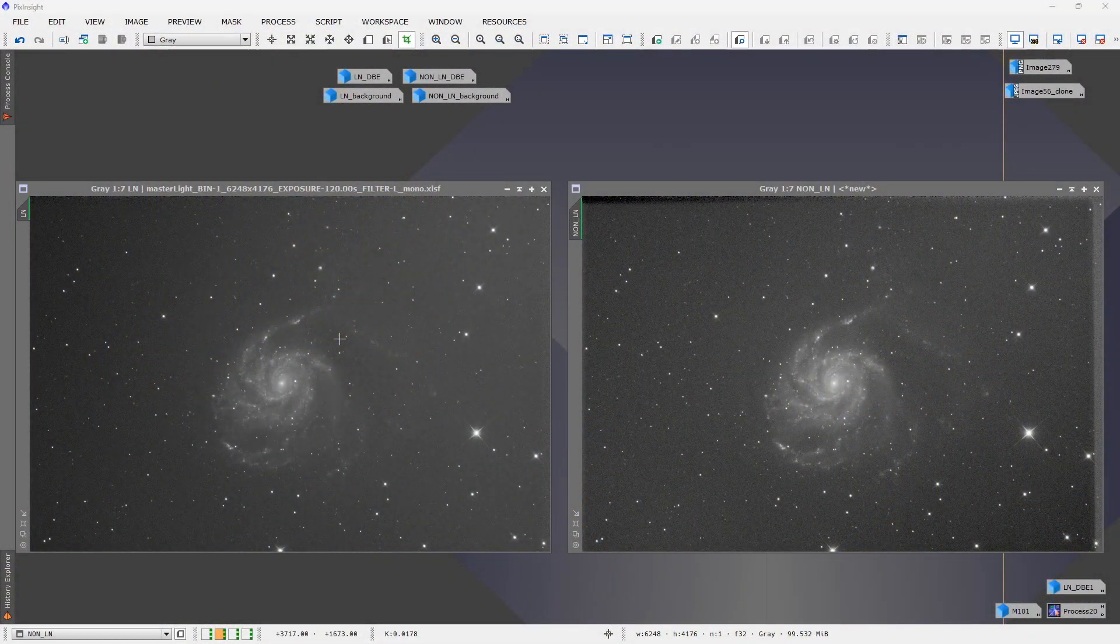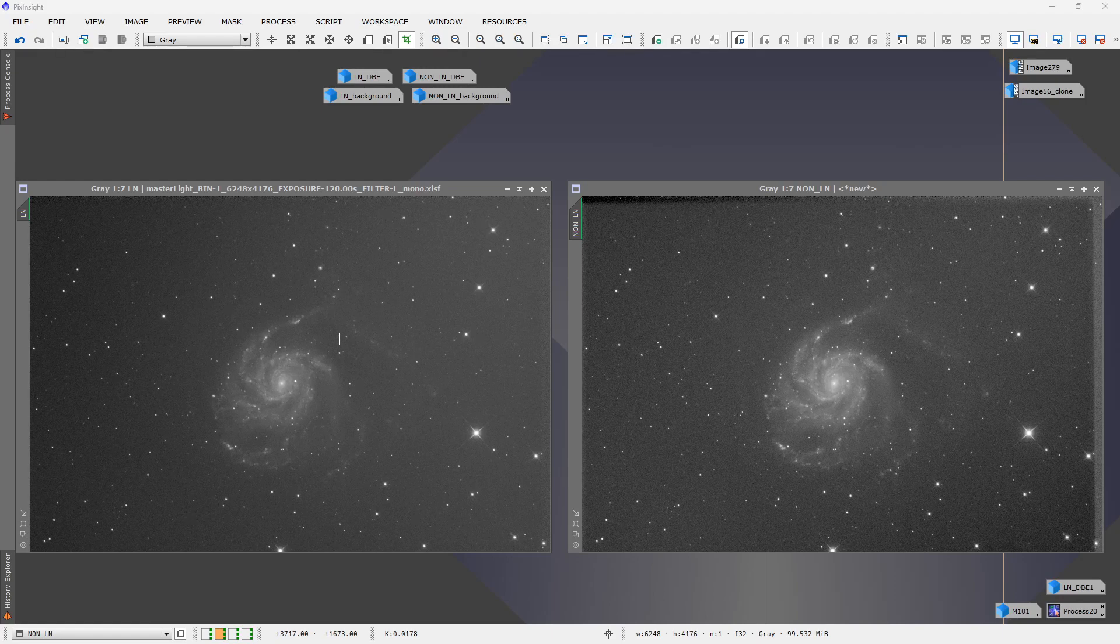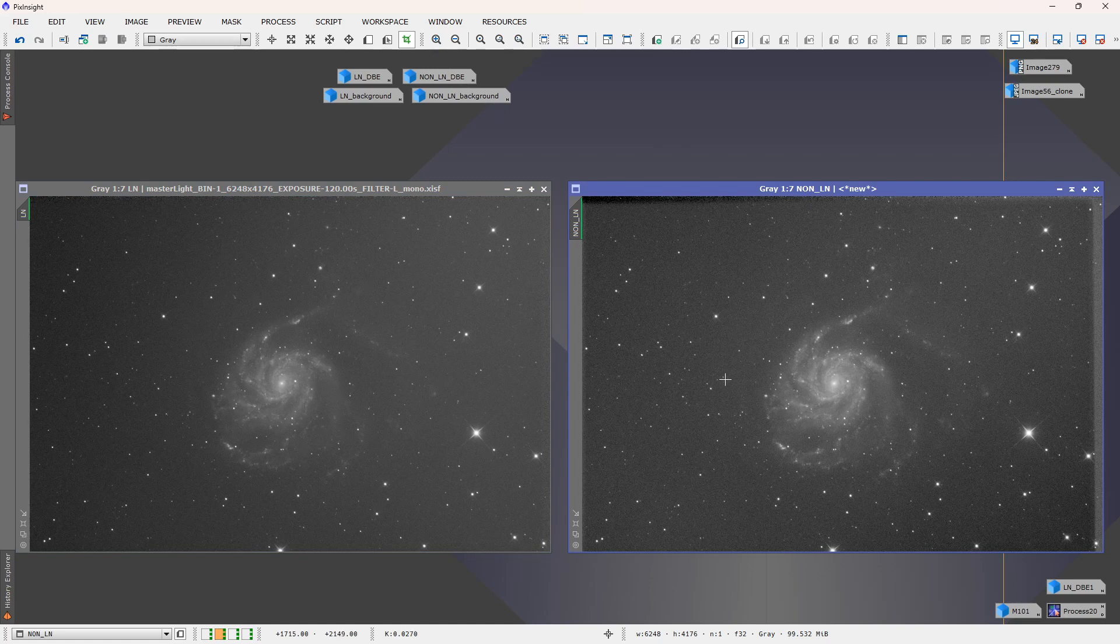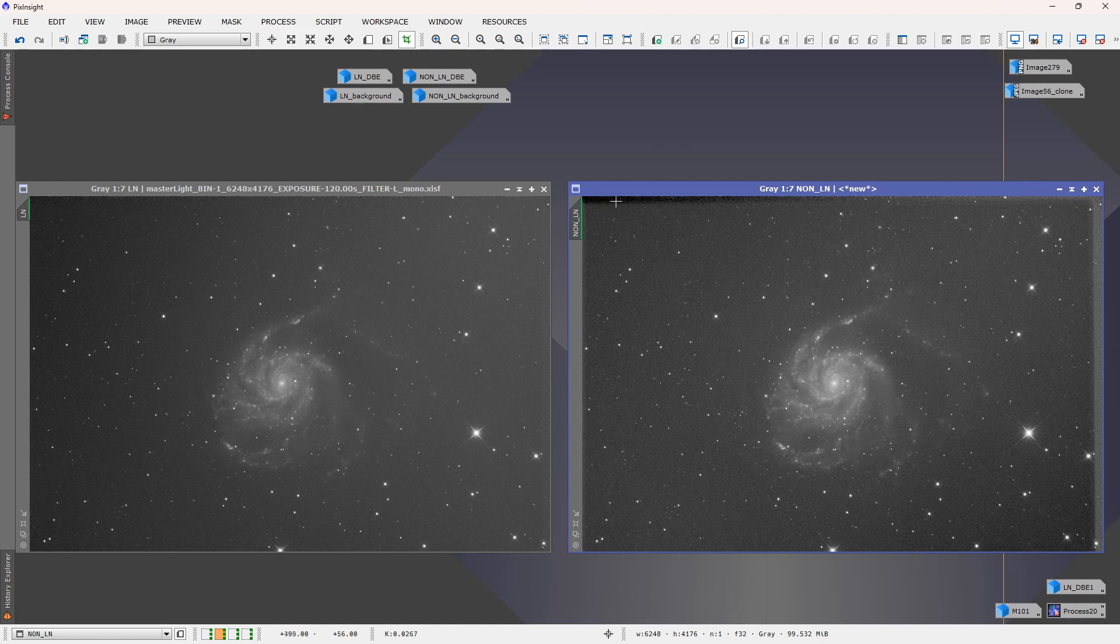I've got an example up on the computer for you to see here, so I'm going to move you over there. Okay, so what I've got on the screen here are two separate stacks. Identical data, the one on the left is with local normalization applied during pre-processing. The one on the right does not have local normalization applied. When you just look at these, you can see a difference. First of all, you'll notice that the outer edges of the non-local normalization has dark and bright spots.